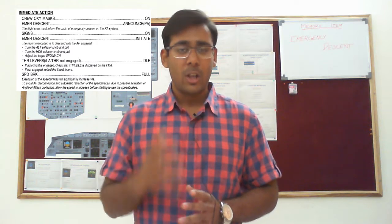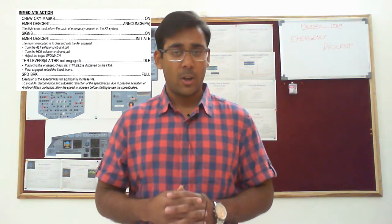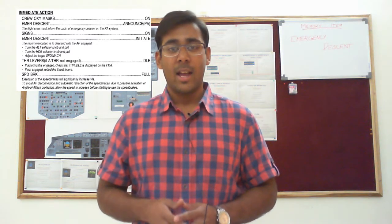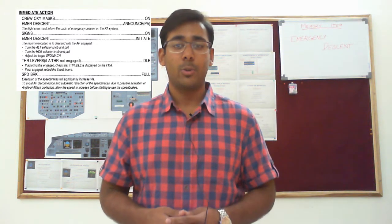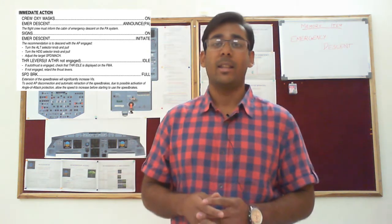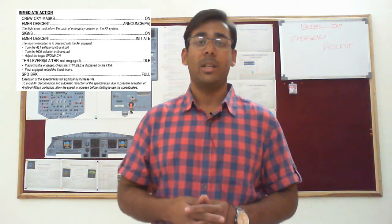Firstly, don the oxygen mask and establish communication with the second crew member, then announce on PA: emergency descent. Then the pilot monitoring will switch all signs to ON from the overhead panel, and then the pilot flying will initiate the emergency descent.